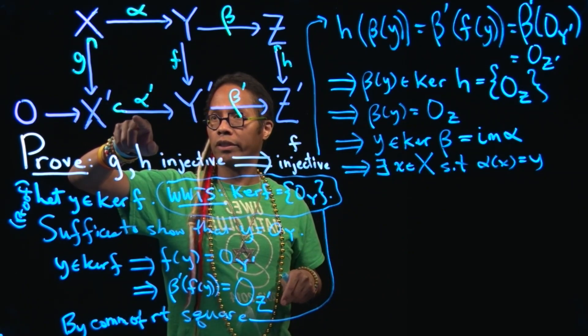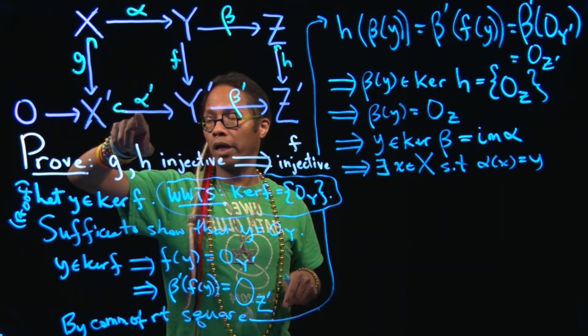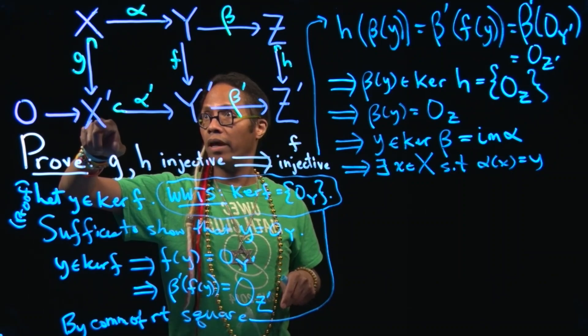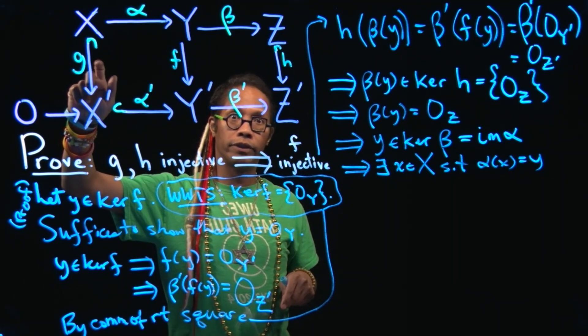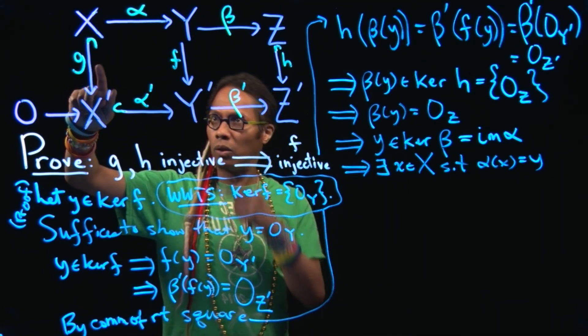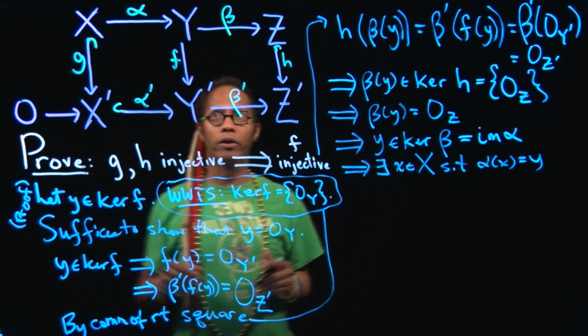Inevitably, we have not used the injectivity of alpha prime, which is guaranteed by exactness at X prime. And we have not used the injectivity yet of G, right? So let's travel around by commutativity of the square here.